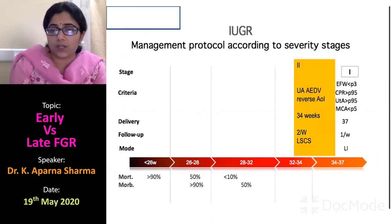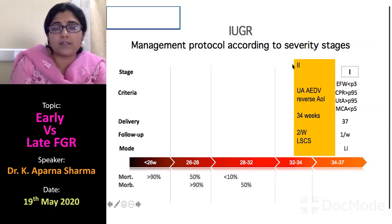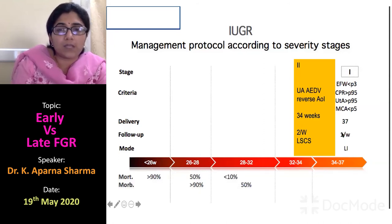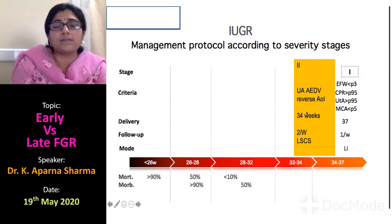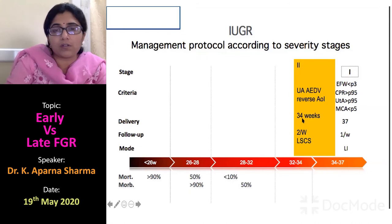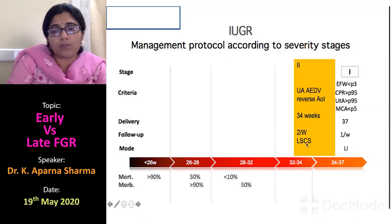For stage one FGR — EFW less than third centile or CPR more than 95th centile — delivery is at 37 weeks. Monitoring is weekly and the mode of delivery remains vaginal. For stage two FGR — absent end-diastolic flow — we do not take the pregnancy beyond 34 weeks. Follow-up is biweekly and mode of delivery is LSCS. This can be slightly flexible depending on nursery facilities, biophysical profile, and daily monitoring.